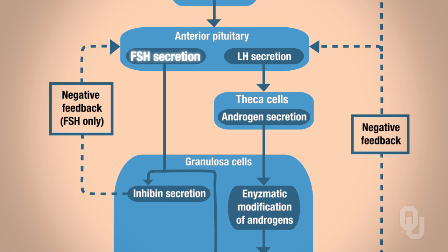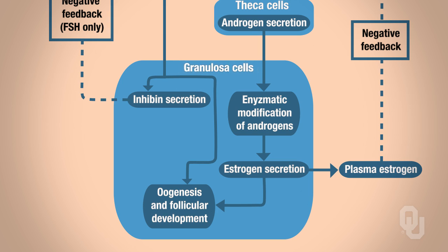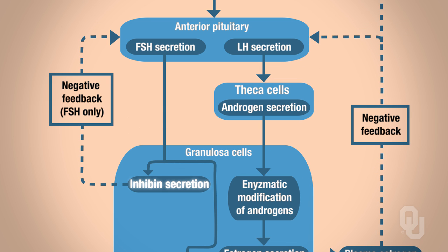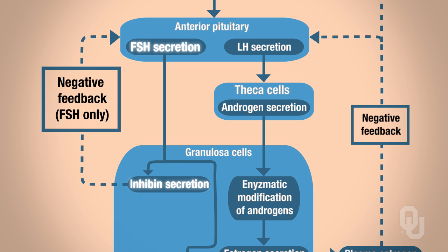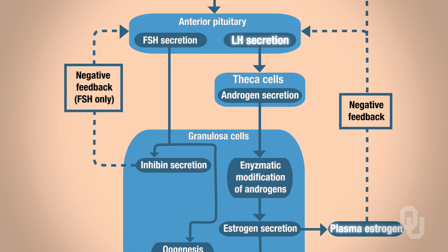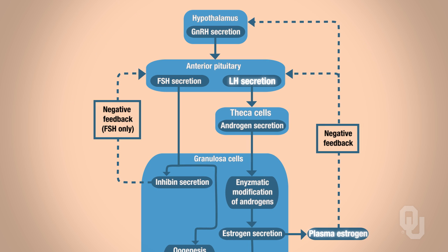When FSH levels increase, FSH also targets the granulosa cells. FSH can directly assist with oogenesis and follicular development, but it can also trigger the synthesis and secretion of inhibin from the granulosa cells. Just like in the male reproductive system, inhibin only shuts off FSH via negative feedback. To shut off the remainder of this system, we need plasma estrogen to shut off LH secretion and shut off the hypothalamus.